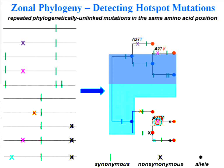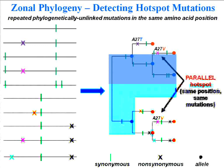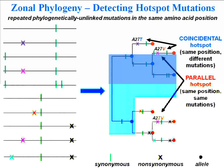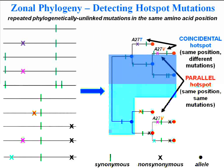If we denote a specific position — say position 27, where alanine is transformed to either valine or threonine — there are two possible types of hotspot mutations. One is parallel hotspot mutations: the same mutation at the same position. The other is coincidental hotspot mutations: different mutations, such as valine or threonine, at the same position. Parallel hotspot mutations imply that selection is acting to modify protein function in a very specific, fine-tuned manner, with the same change happening repeatedly across different allelic backgrounds. For coincidental hotspot mutations, selection may be acting to eliminate protein function or epitope recognition by antibodies, favoring multiple different mutations at positions crucial for the overall structural and functional integrity of the protein.